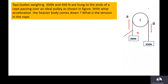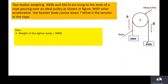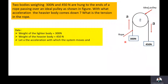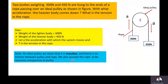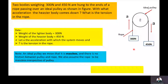Now we will write the data. The weight of the lighter body is equal to 300N and the weight of the heavier body is equal to 450N. A is the acceleration with which the system moves and T is the tension in the rope. The ideal pulley means it is massless and there is no friction between the pulley and rope. We also assume the rope to be massless. So here, pulley as well as rope are massless.